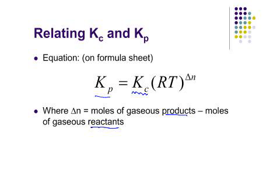So let's go on and look at some equations where we can calculate delta N. If you can calculate delta N, then it's very easy really to convert from KP to KC and vice versa.